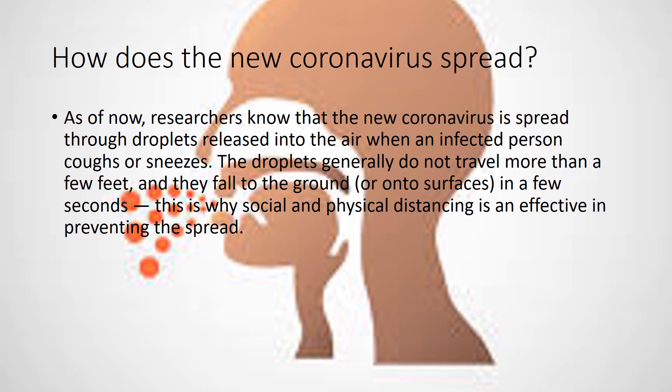How does the new coronavirus spread? Researchers know that the new coronavirus is spread through droplets released into the air when an infected person coughs or sneezes. The droplets generally do not travel more than a few feet and fall to the ground or onto surfaces within a few seconds. This is why social and physical distancing is effective in preventing the spread.